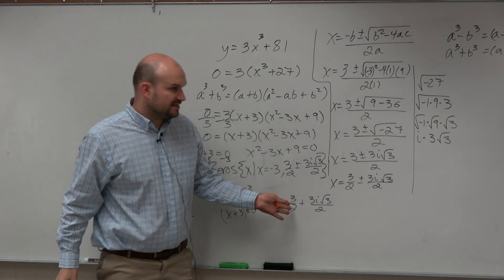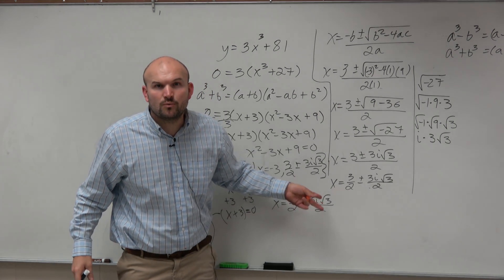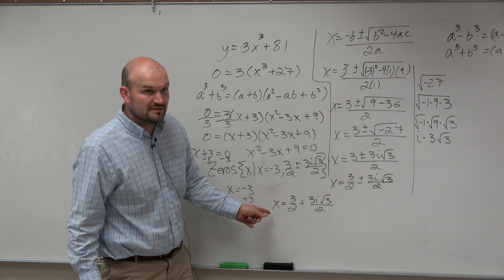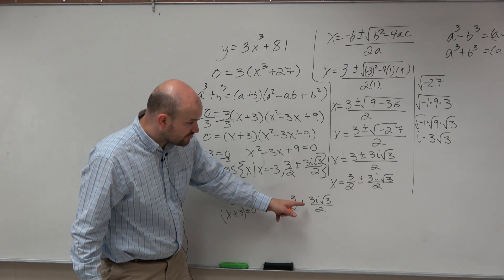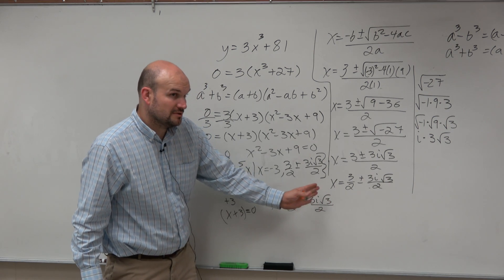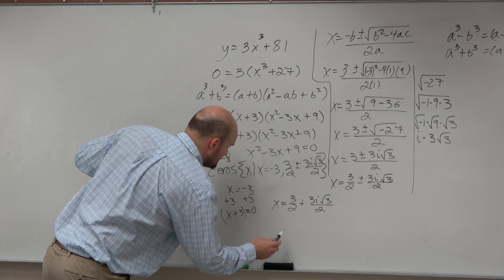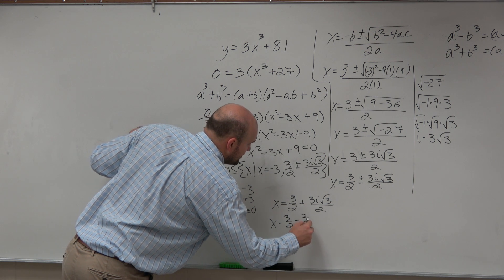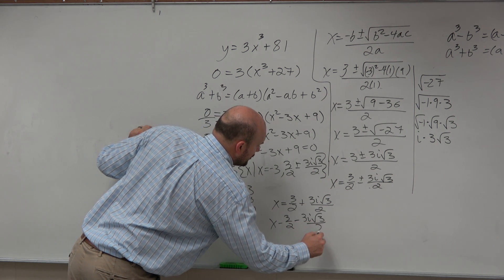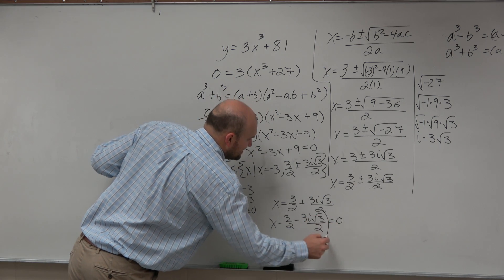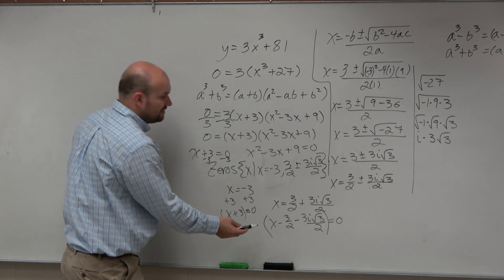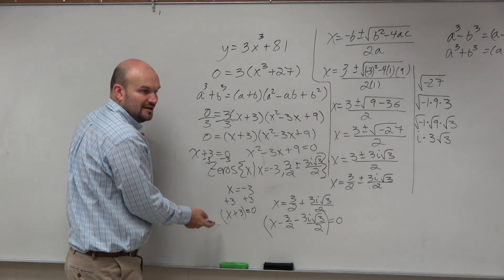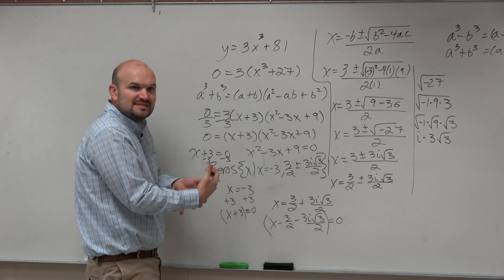So guys, if you look at this, if I wanted to set this equal to zero, what mathematical operations would I be doing? Would I be subtracting 3 halves? Yes. And would I subtract 3i square root of 3 over 2? Yes. So my factor would look like this: x minus 3 halves minus 3i square root of 3 over 2 equals 0. But that is my factor. It looks really confusing, but it's the same process as what I did over here. You're just getting everything over to the same side to equal zero.